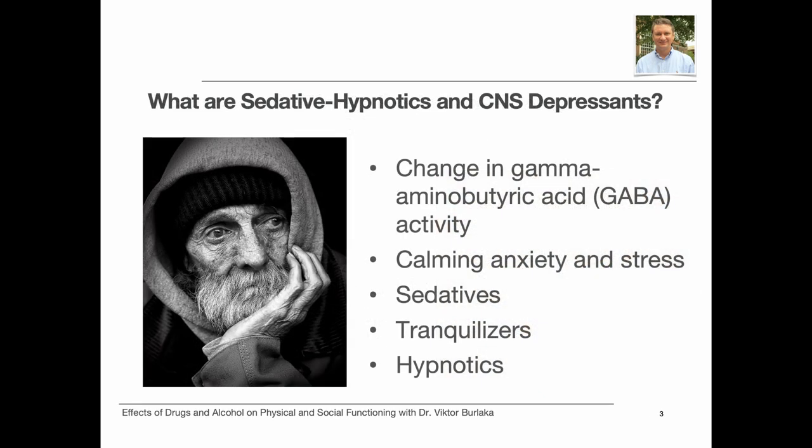What are sedative hypnotics and CNS depressants? These are substances that slow down brain activity by changing GABA neurotransmitter activity. GABA, or gamma-aminobutyric acid, is one of the brain's main inhibitory neurotransmitters that plays a key role in the regulation of anxiety. The result is a general calming influence on anxiety and acute stress reactions. A sedative is a compound producing a calming effect or reducing excitability in the central nervous system. Tranquilizers are medications used to decrease anxiety and increase relaxation. A hypnotic is a compound that promotes sleep or drowsiness.